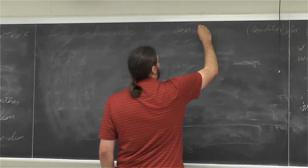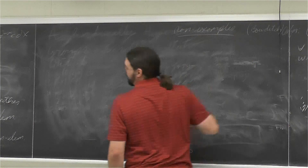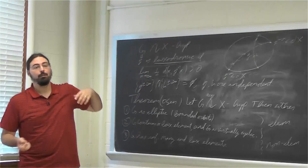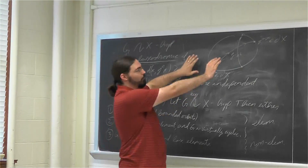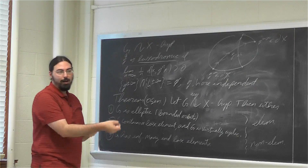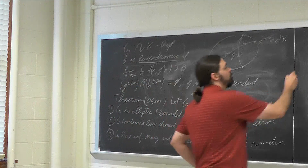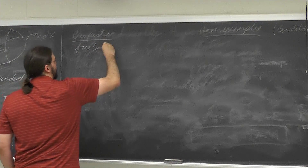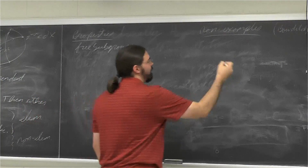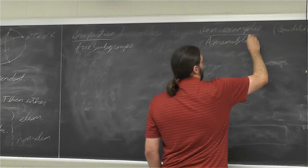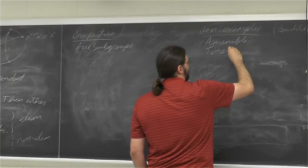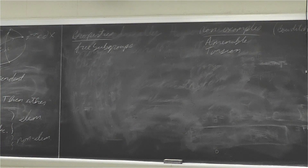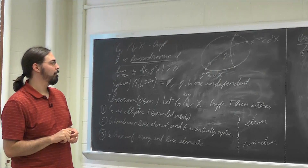Let me list some non-examples. As soon as you have two independent loxodromic elements, you can play ping pong — a classical argument in geometric group theory that says high powers of the two elements generate a free subgroup. So acylindrically hyperbolic groups have free subgroups. This rules out amenable groups, torsion groups, groups satisfying a law, and anything that does not contain free subgroups.